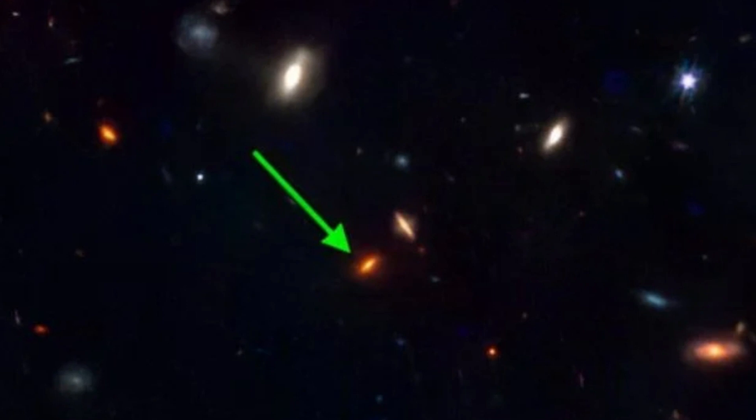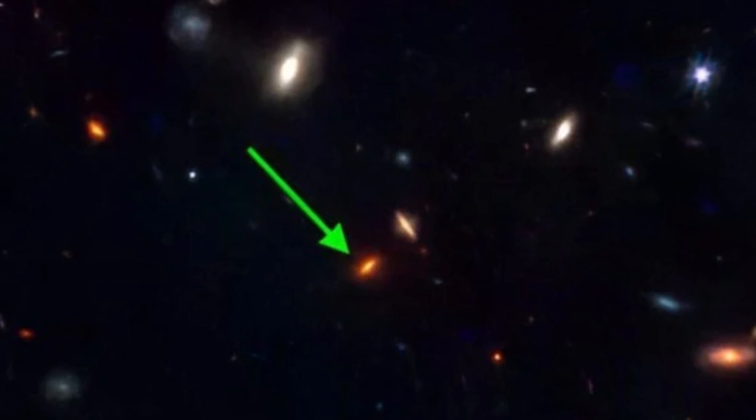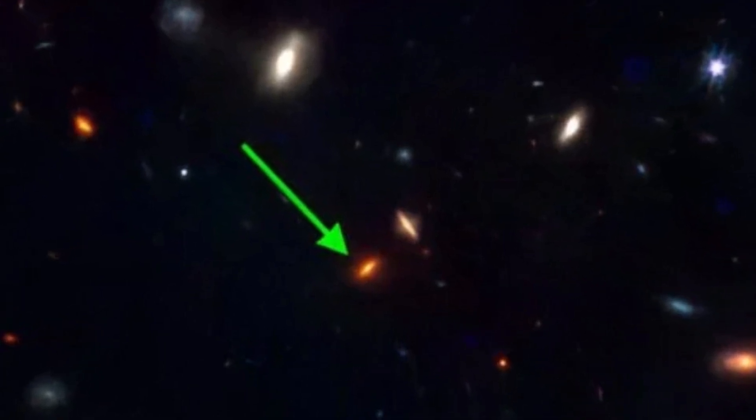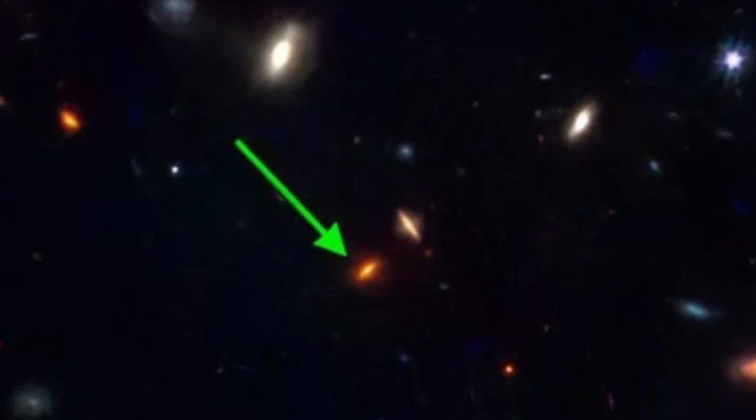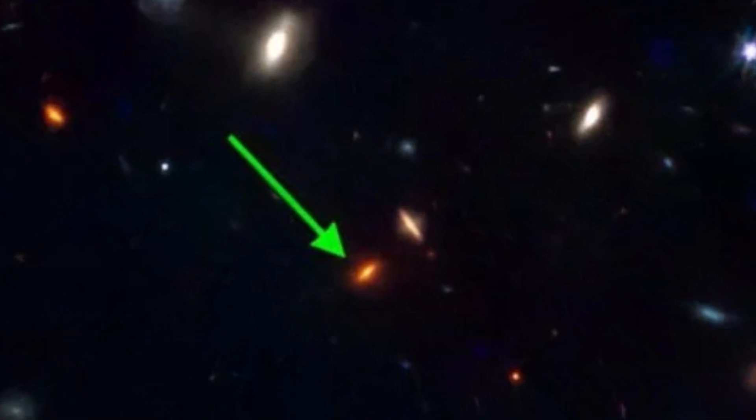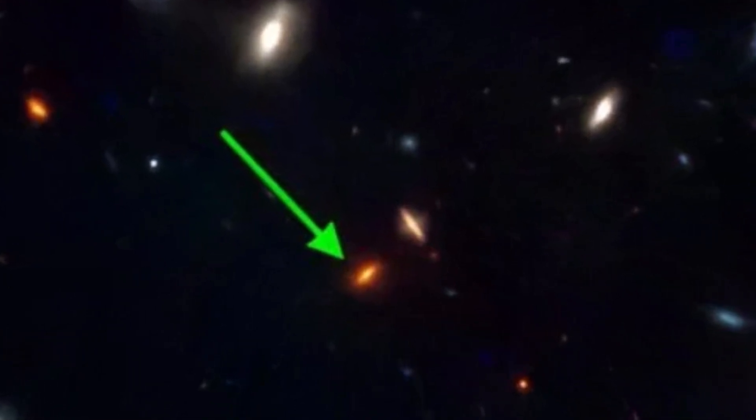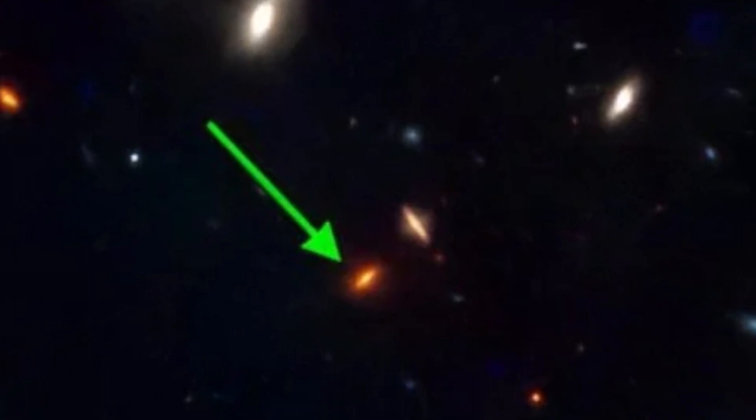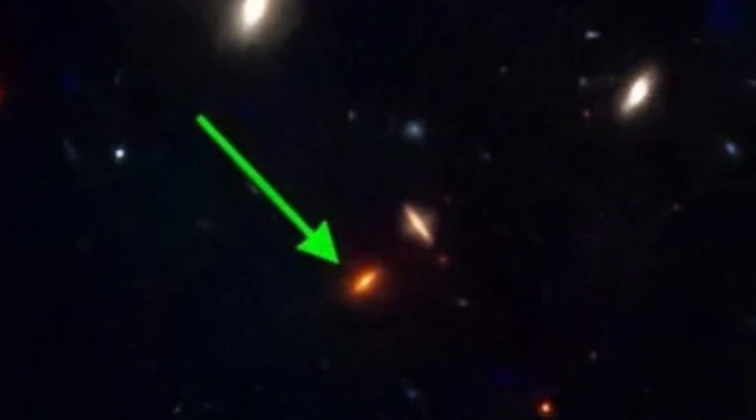Captured by the near-infrared camera aboard the JWST, the image depicts a striking red disk galaxy. At first glance, it may appear similar to countless other celestial objects scattered throughout the cosmos. However, upon closer examination through spectral analysis, scientists uncovered its extraordinary nature.